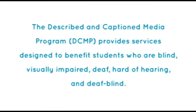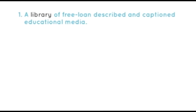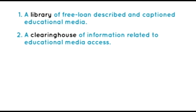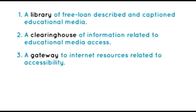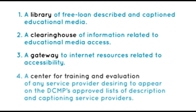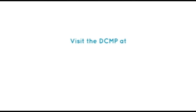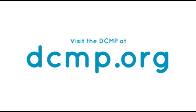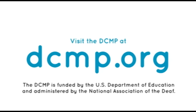The Described and Captioned Media Program provides services designed to benefit students who are blind, visually impaired, deaf, hard of hearing, and deafblind. These services include a library of free, loan-described, and captioned educational media, a clearinghouse of information related to educational media access, a gateway to Internet resources related to accessibility, and a center for training and evaluation of any service provider desiring to appear on the DCMP's approved lists of description and captioning service providers. There are no user registration or service fees. Visit the DCMP at DCMP.org. The DCMP is funded by the U.S. Department of Education and administered by the National Association of the Deaf.